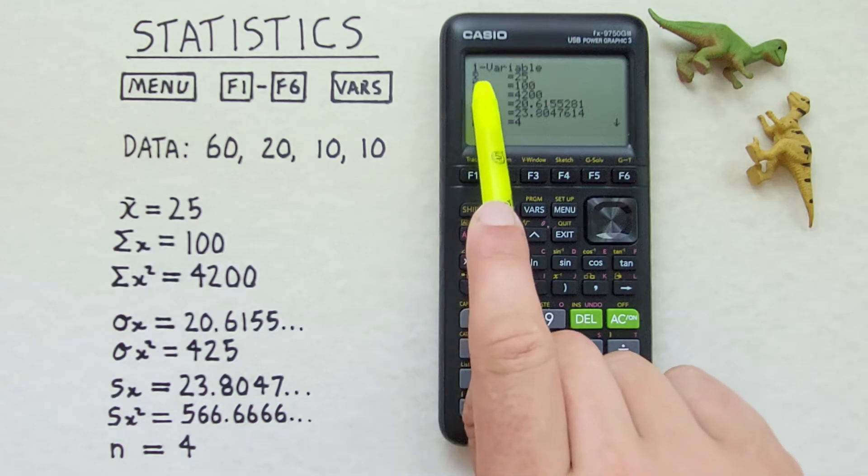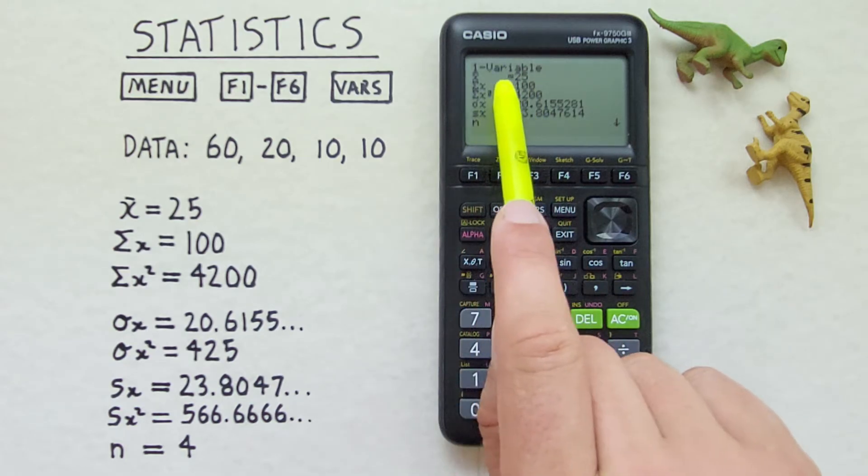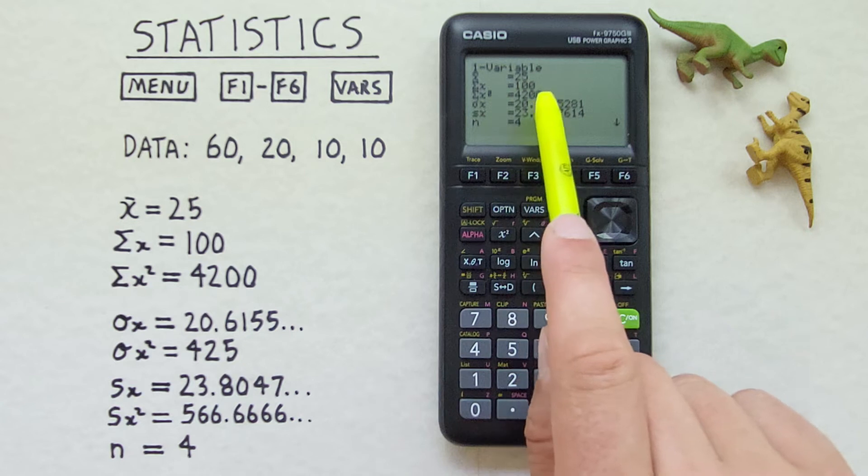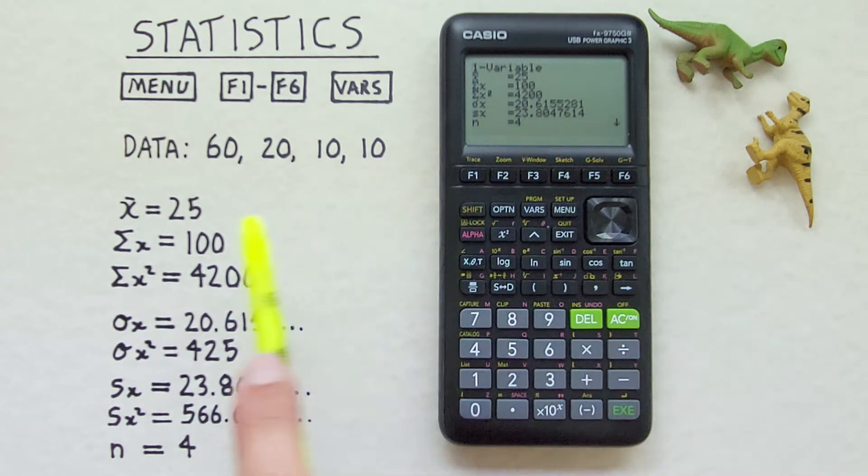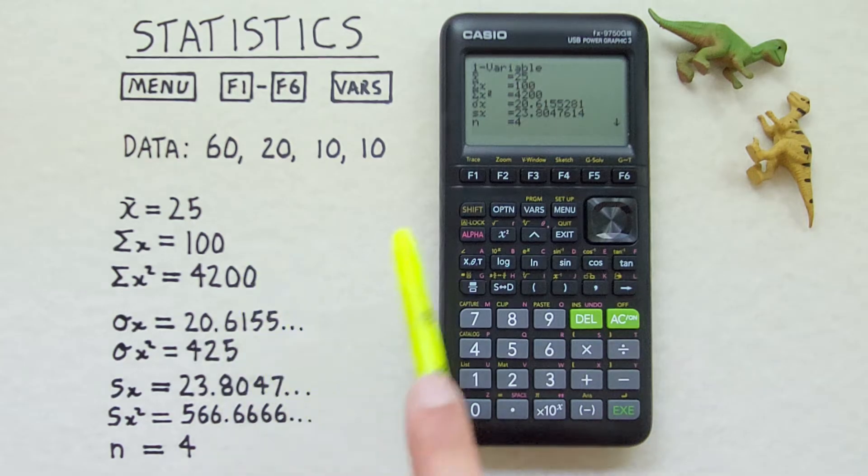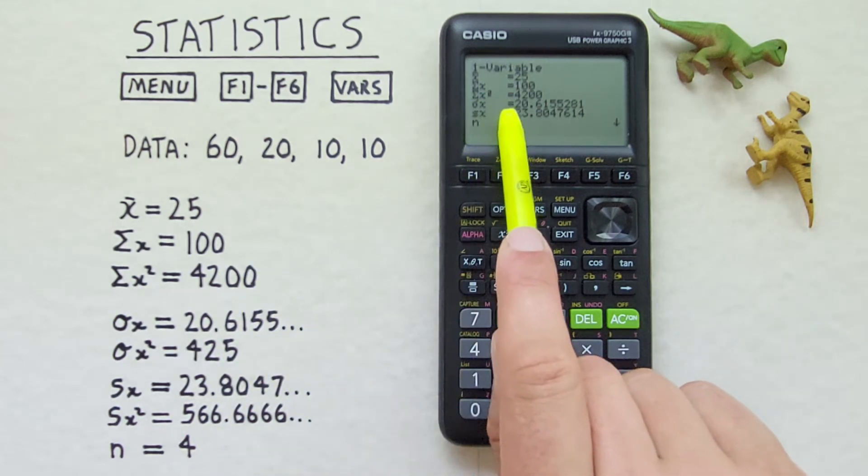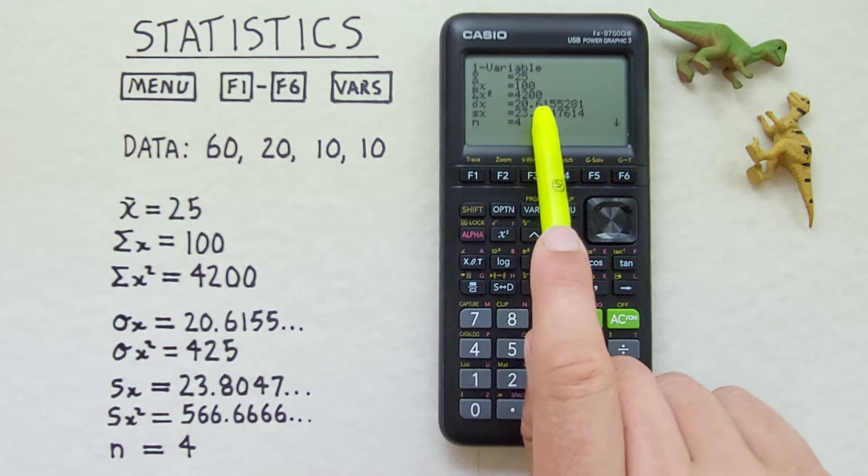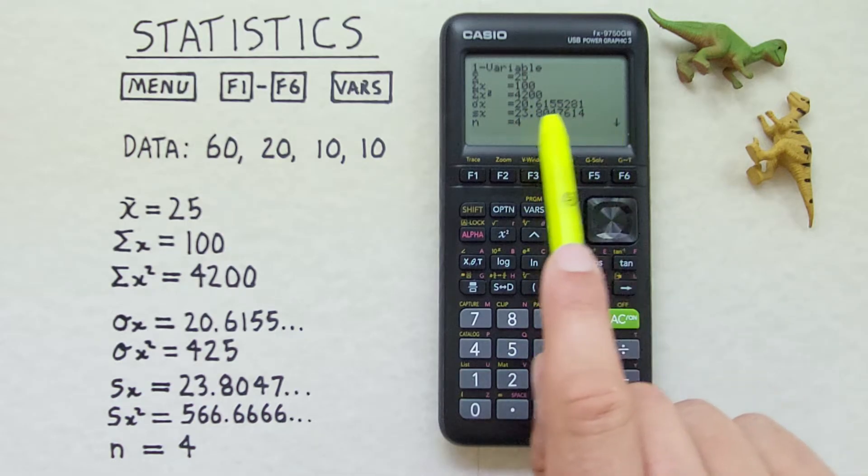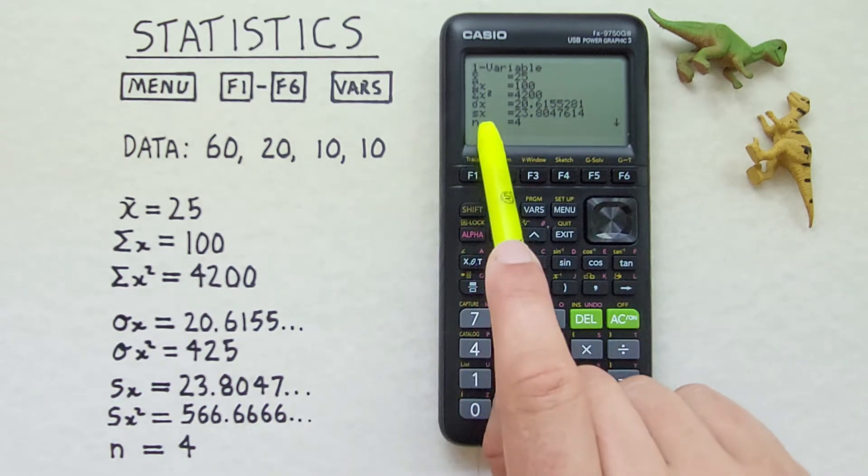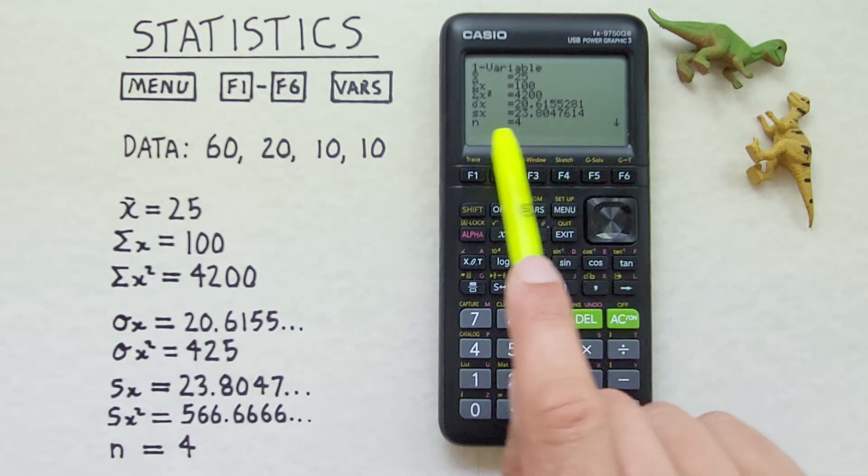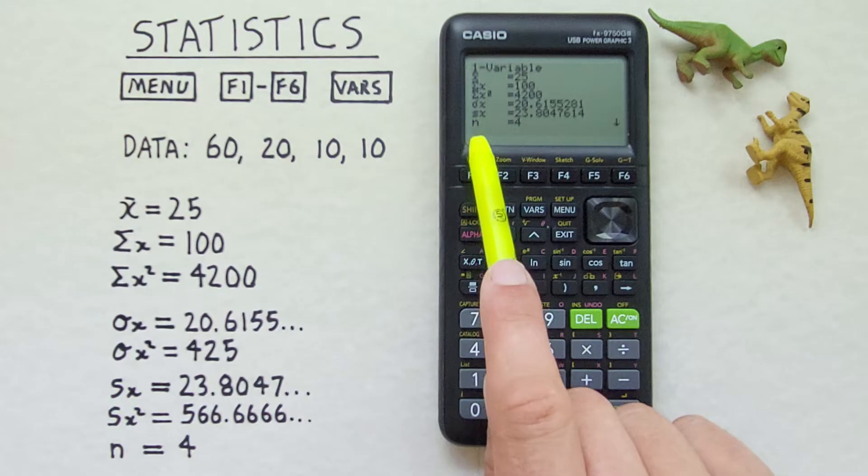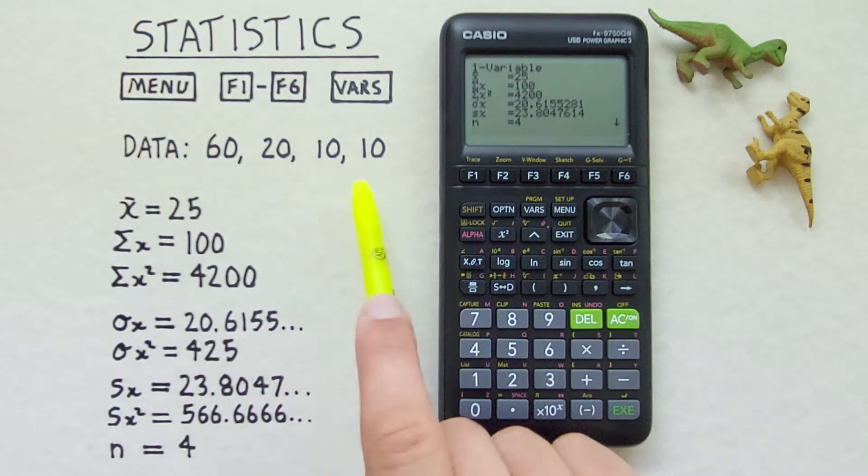We get an X bar or mean of 25. We get a sum of 100. A sum of squares of 4,200 which is correct. We get a population standard deviation of 20.6155. A sample standard deviation of 23.8047. And an n or number of variables of 4 which again is correct.